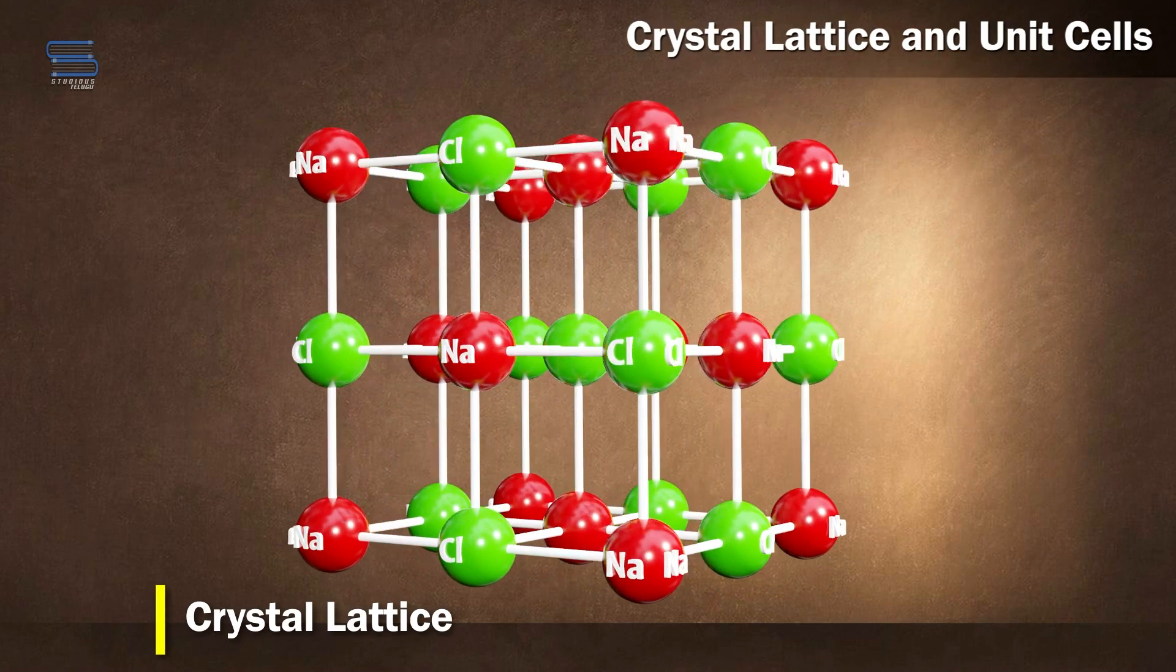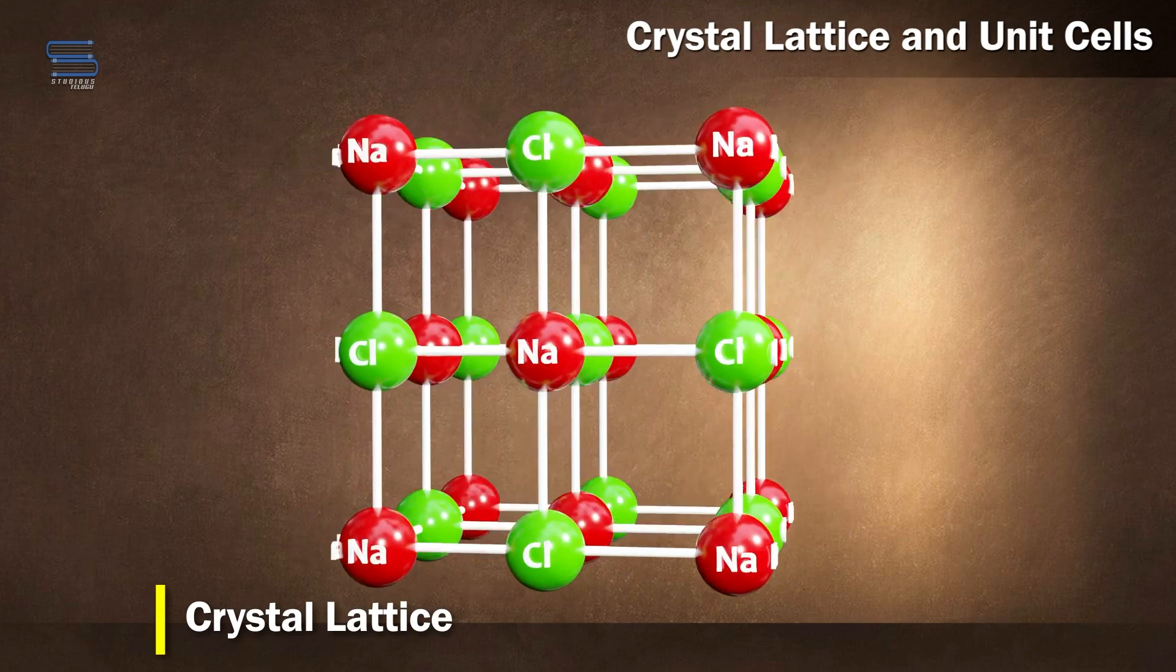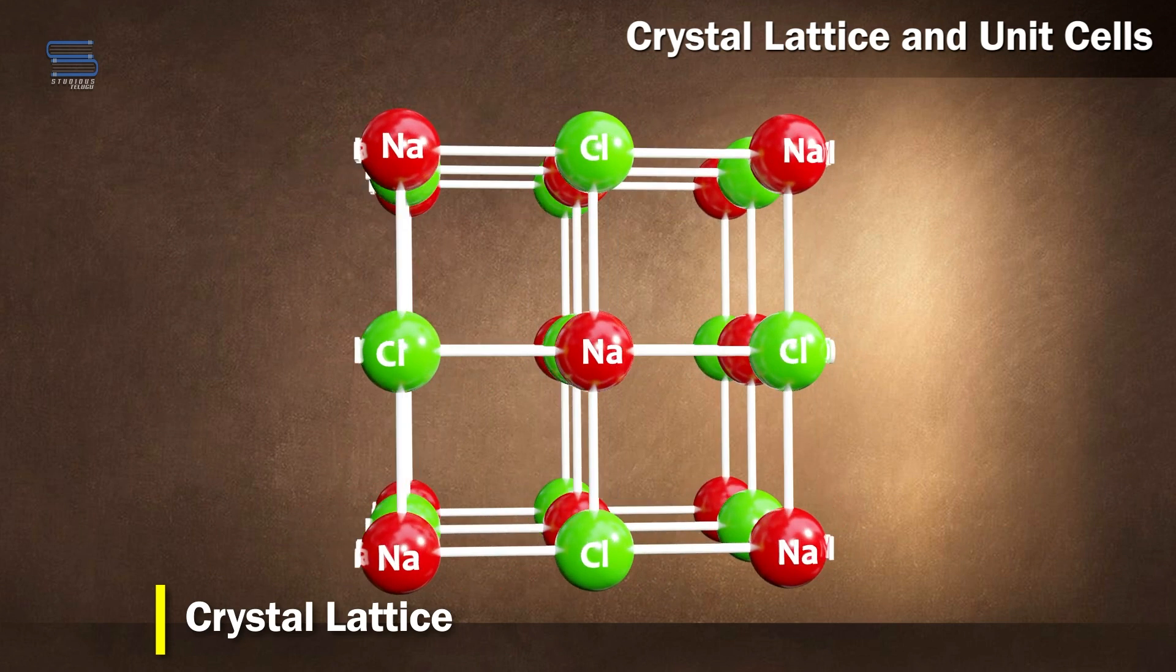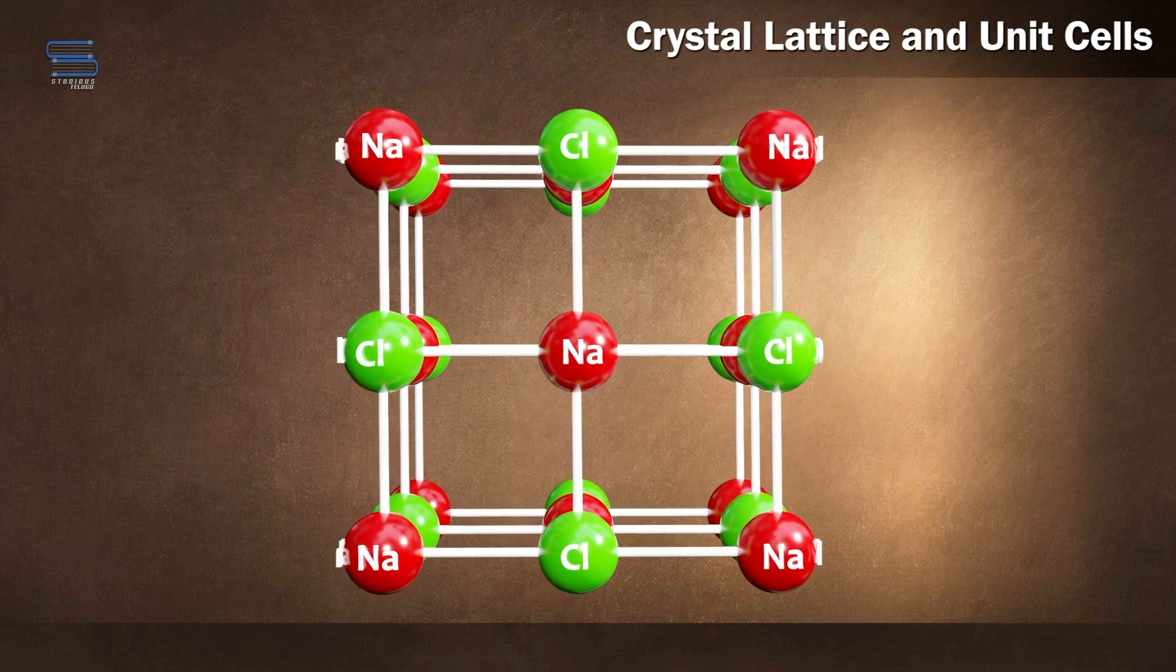The crystal lattice is a fundamental concept in the study of solids. It refers to the repeating arrangement of atoms, ions, or molecules in a crystal. This arrangement is defined by the unit cell, which is the smallest repeating unit of the crystal lattice.